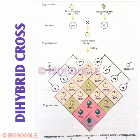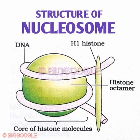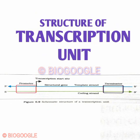Next is the structure of DNA — the Watson and Crick model. Show the two strands, nitrogen bases, minor groove, major groove, hydrogen bonds, the 5' and 3' ends completely and clearly. Then the structure of a nucleosome — clearly mention the histone proteins H1, the DNA core histone, and everything associated with it.